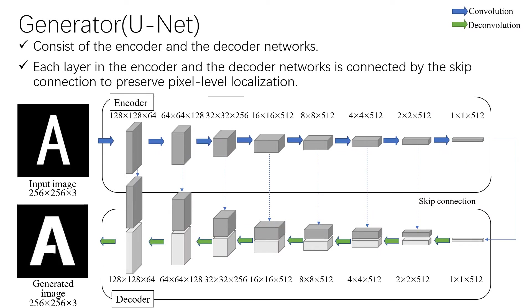About the generator, we use a network named UNET. The UNET consists of the encoder and the decoder networks with eight convolutional layers each. Each layer in the encoder and decoder networks is connected by the skip connection to preserve pixel-level localization. We use the generator to transfer the input font to the target font or AdFont.